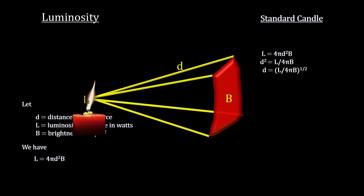For example, if we measured the brightness of a 10 watt candle from some distance away to be a tenth of a watt per square meter, we could calculate that the candle is just under three meters away.